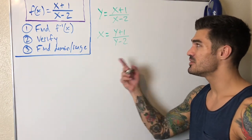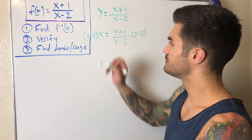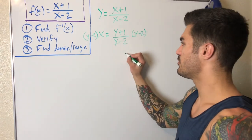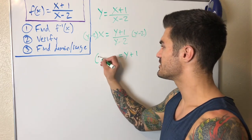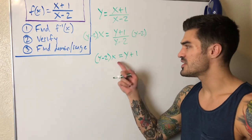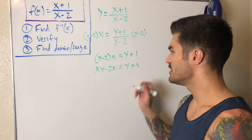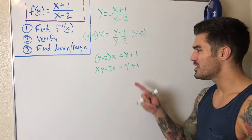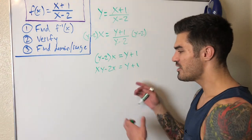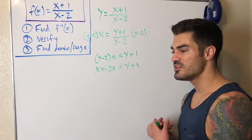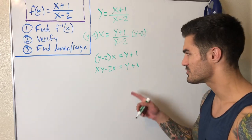First, eliminate the denominator by multiplying both sides by (y - 2). That gets rid of the denominator and I'm left with y + 1 on the right, and (y - 2) times x on the left. I distribute the x: xy - 2x = y + 1. Now here's where students get stuck — there are two different y's. The trick: get everything with y to one side, everything else to the other, then factor out y and divide.